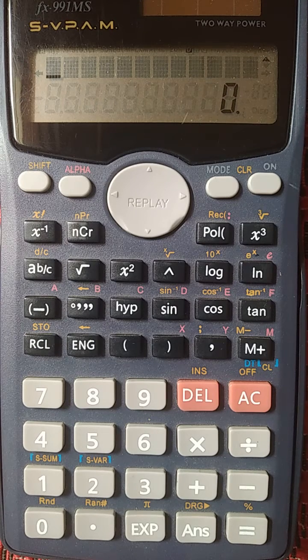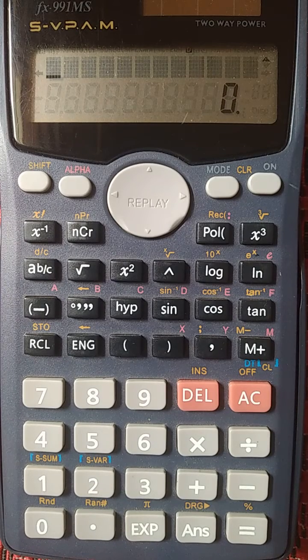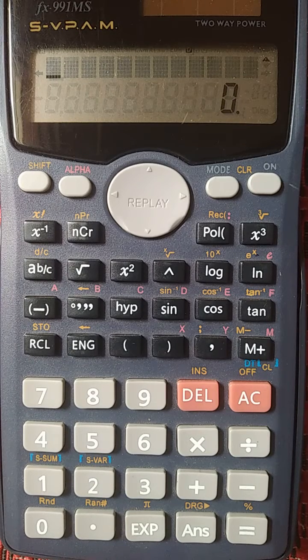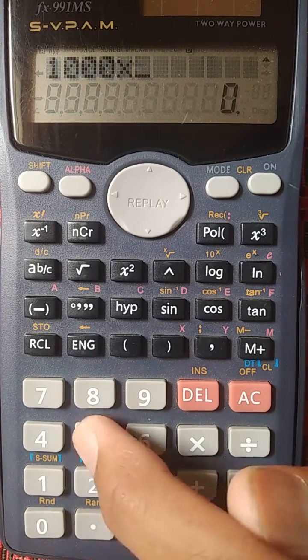Hello friends, welcome back. In this video we are going to see how we can customize our answer using commas and dots. So let's see. Suppose I want to multiply 1000 by 500.